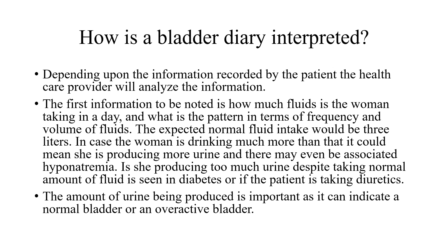If the woman is drinking much more than 2 to 3 liters, she could be producing more urine, which may even be associated with hyponatremia. If she is producing too much urine despite taking a normal amount of fluid, this could indicate diabetes or the patient may be taking diuretics. The amount of urine being produced is important as it can be an indication of a normal bladder or an overactive bladder.